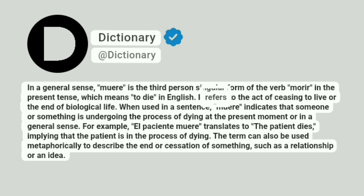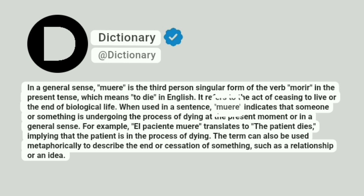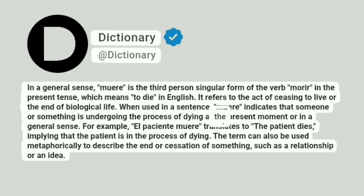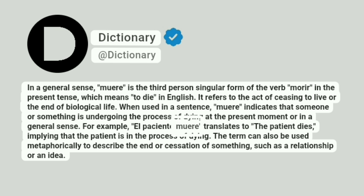It refers to the act of ceasing to live or the end of biological life. When used in a sentence, muere indicates that someone or something is undergoing the process of dying at the present moment or in a general sense. For example, el paciente muere translates to the patient dies, implying that the patient is in the process of dying.